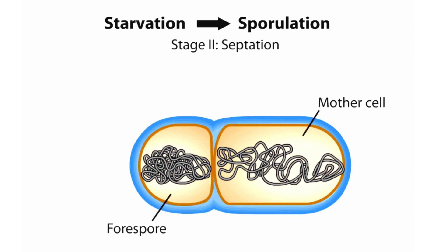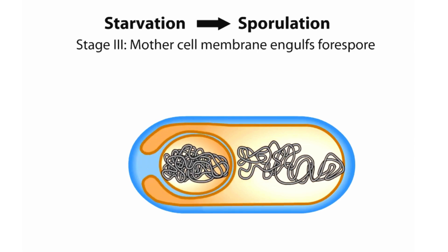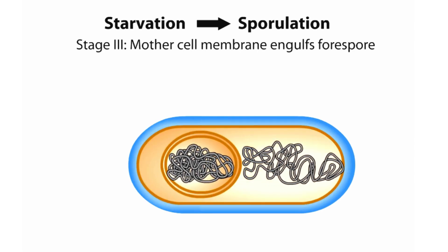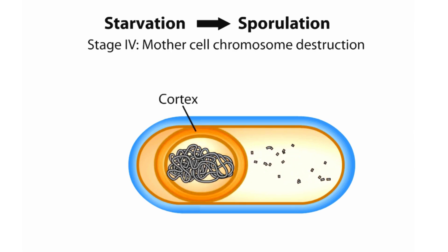Each compartment contains a chromosome. In Stage 3 of sporulation, the mother cell membrane engulfs the forespore, resulting in a structure encircled by two membranes. Stage 4 is when the mother cell chromosome is destroyed, and the cortex — made up of a thick peptidoglycan layer — is placed between the two membranes surrounding the forespore protoplast. This cortex is important in providing heat resistance and maintaining dormancy to the spore.